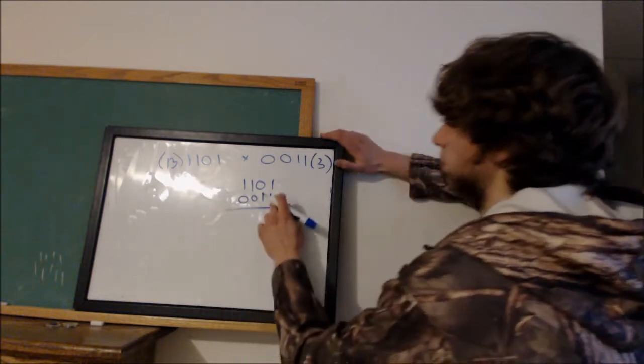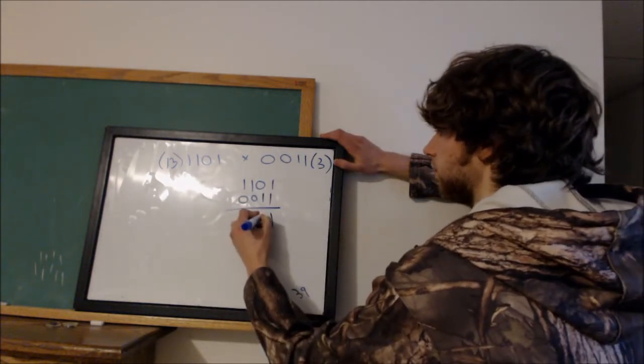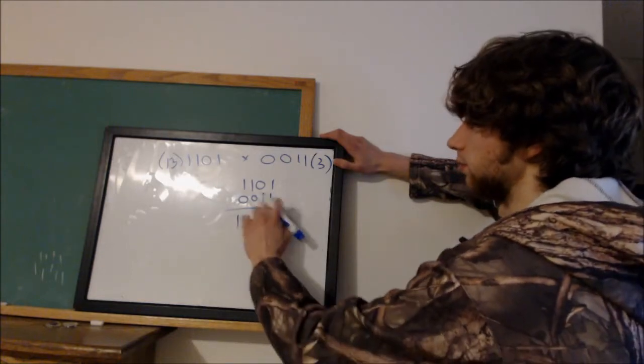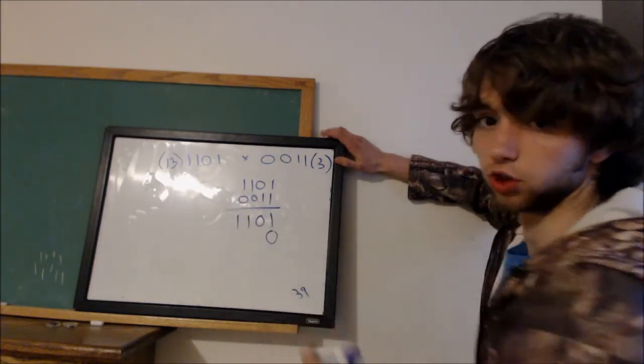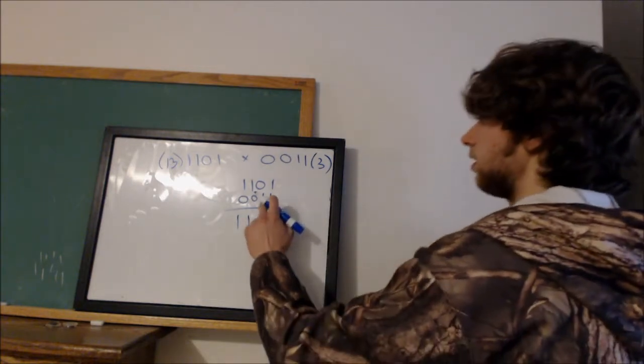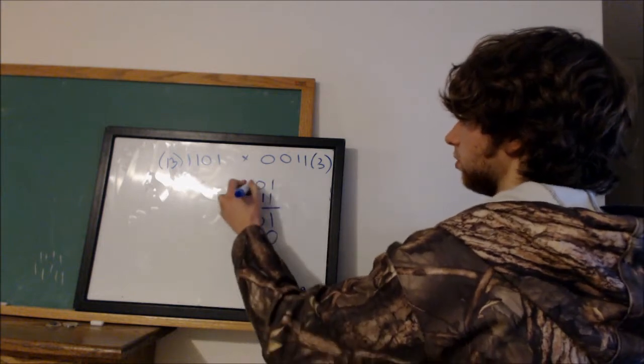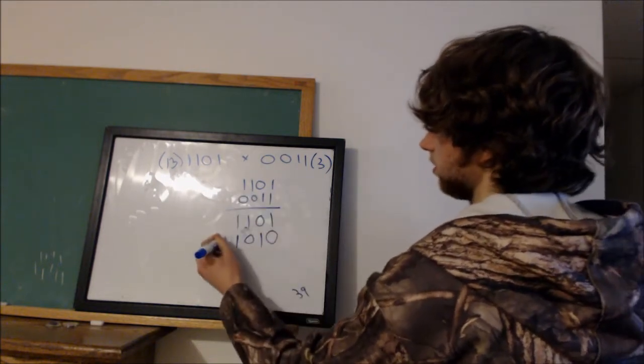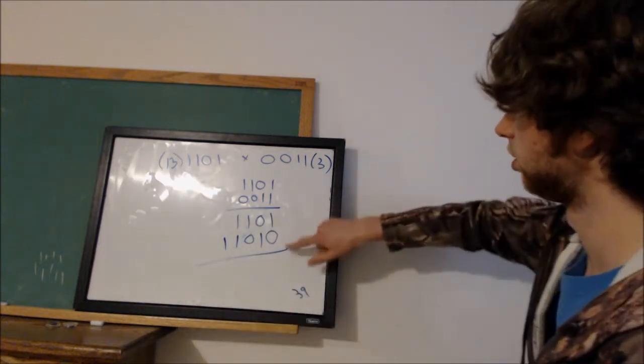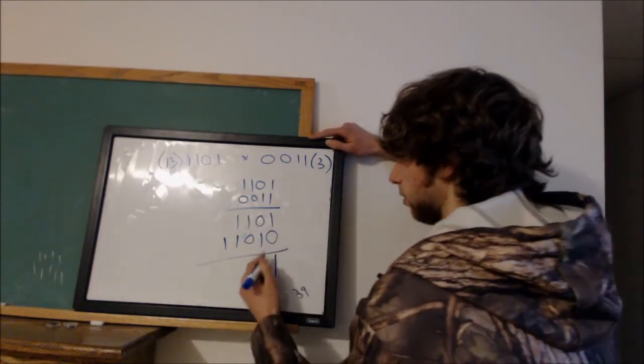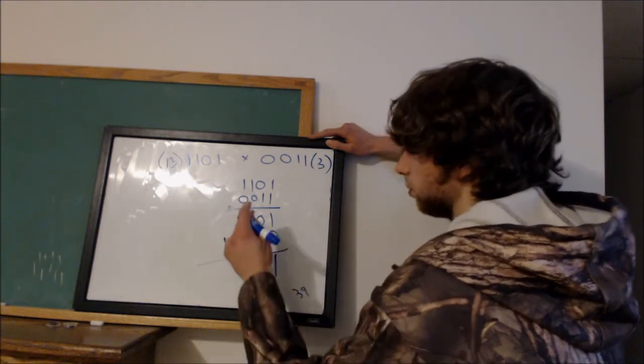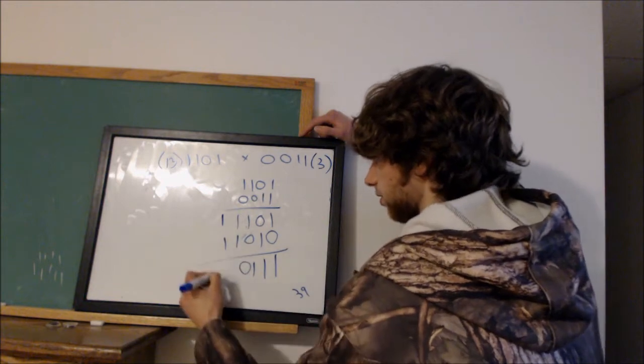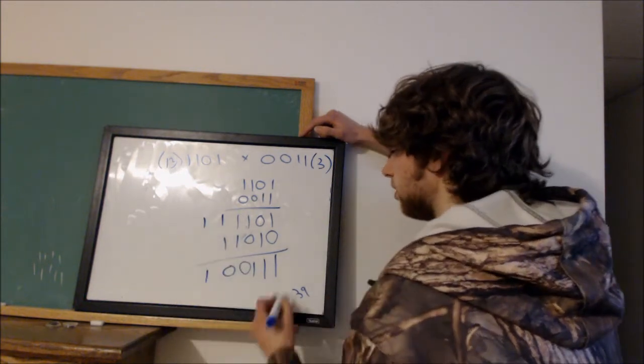Let's try multiplying this. We start here. 1 times 1, 1. 1 times 0, 0. 1 times 1, 1. 1 times 1, 1. All right, then we go to the next one. We add a 0, because we always have to go up the placement for each time, for each decimal we scoot over a place marker. So, 1 times 1, 1. 1 times 0, 0. 1 times 1, 1. 1 times 1 is 1. So, here is what we have. Then we just have to add this together. 1 plus 0 is 1. 1 plus 0 is 1. 1 plus 0 is 1. Now, when you have two 1's, remember you have to carry a 1 and write a 0. So, 0, 1. Do the same thing here. Drop a 0, carry a 1. Boom. So, this is our final answer.